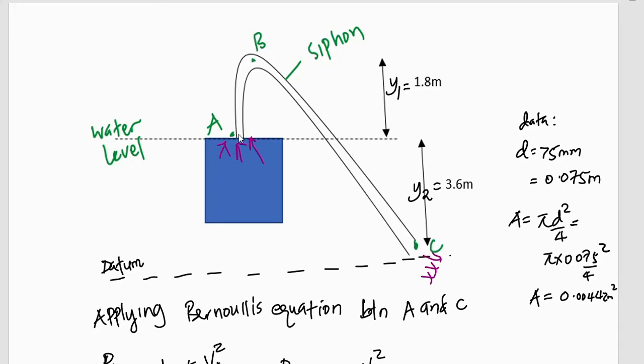we have from point A, point B where you have a crest and point C where you are discharging the flow rate. The dimensions are given, these distances are given because from the water level to the crest is 1.80 meters and below the water level to where you are discharging, the height or the vertical distance is 3.6 meters.